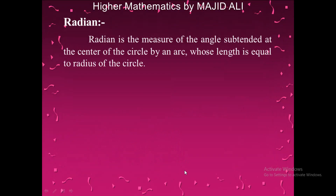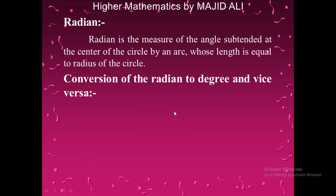Here is the definition of radian. A radian is the unit of angle measurement. It is defined as the measure of the angle subtended at the center of a circle by an arc whose length is equal to the radius of the circle. When the arc length equals the radius, the angle formed is one radian.